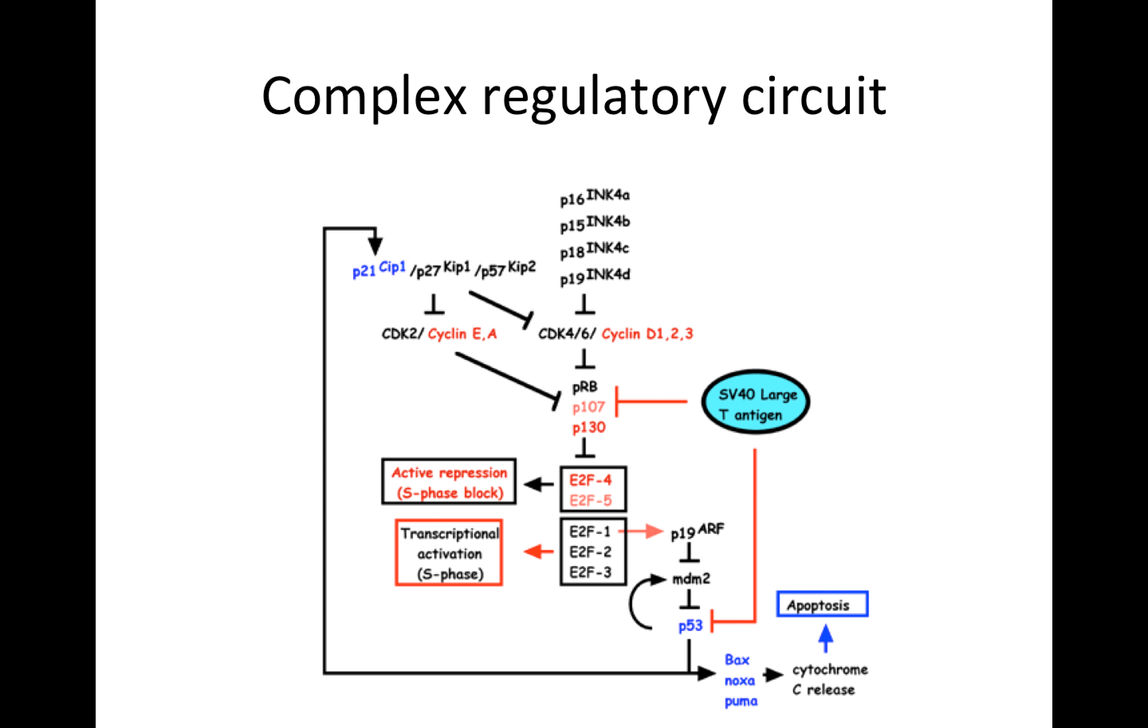And so these end up being pretty complex regulatory circuits. Here, each one of these things is a gene encoding a protein that are cross-regulating. And all these different processes that are being regulated, apoptosis in particular, active repression of the S phase, and the different factors that are involved. I just want to show this diagram to show that the regulatory relationships can be quite complex. We're going to simplify them here in order to really hone in on the function of cancer.